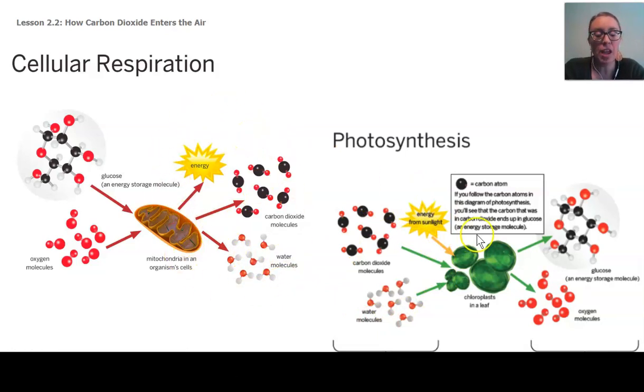And the inputs of cellular respiration—glucose and oxygen—are the outputs of photosynthesis: glucose and oxygen. So these two processes are both important in our ecosystem.